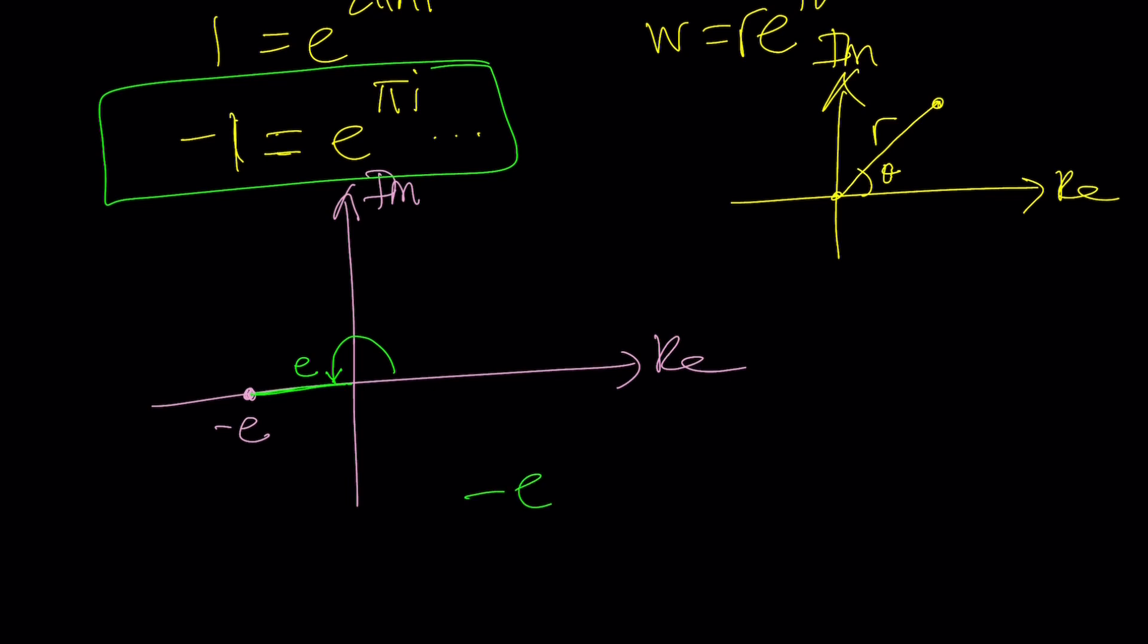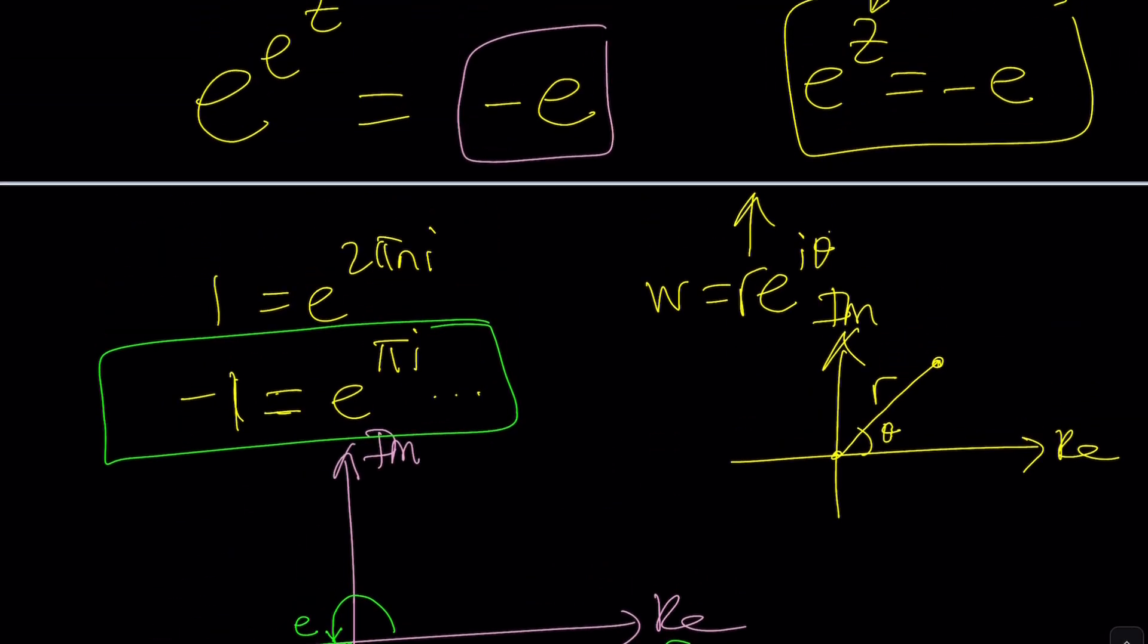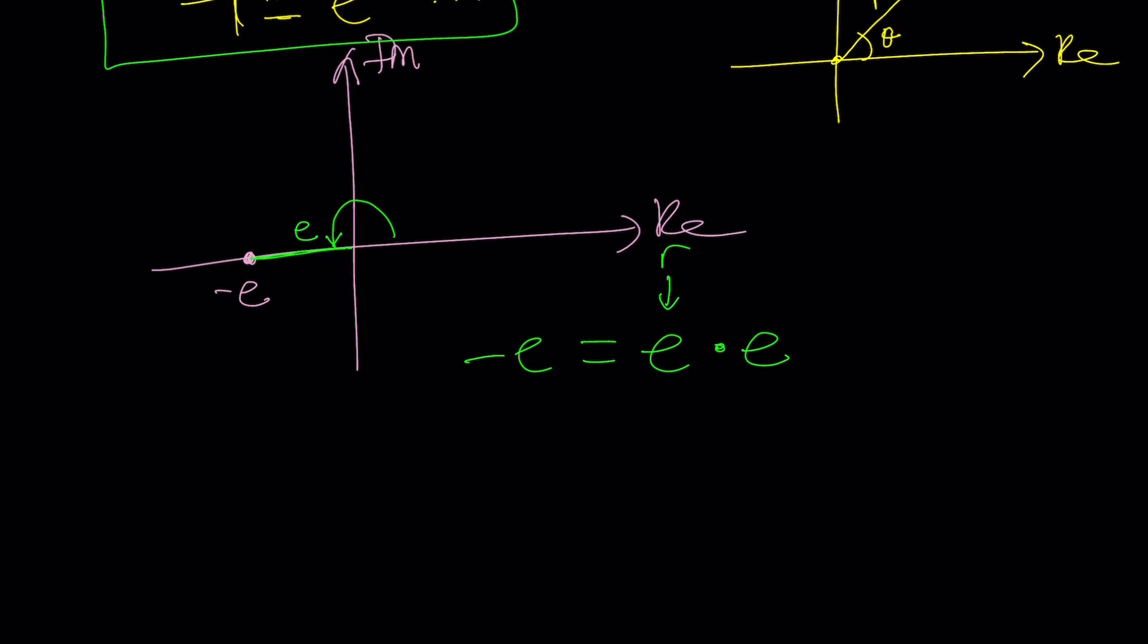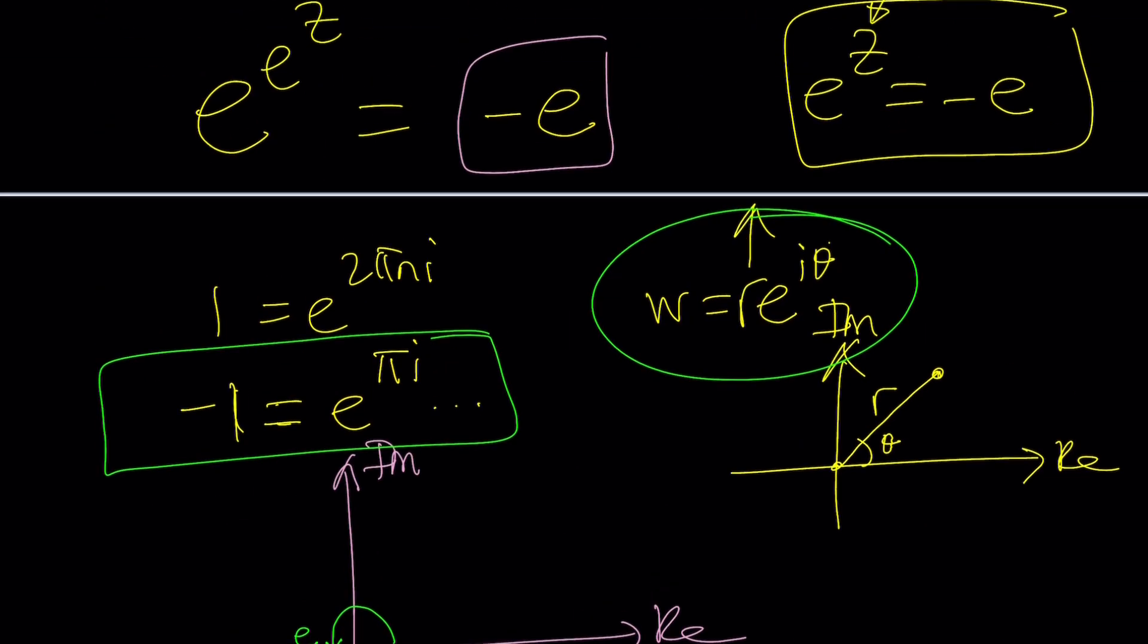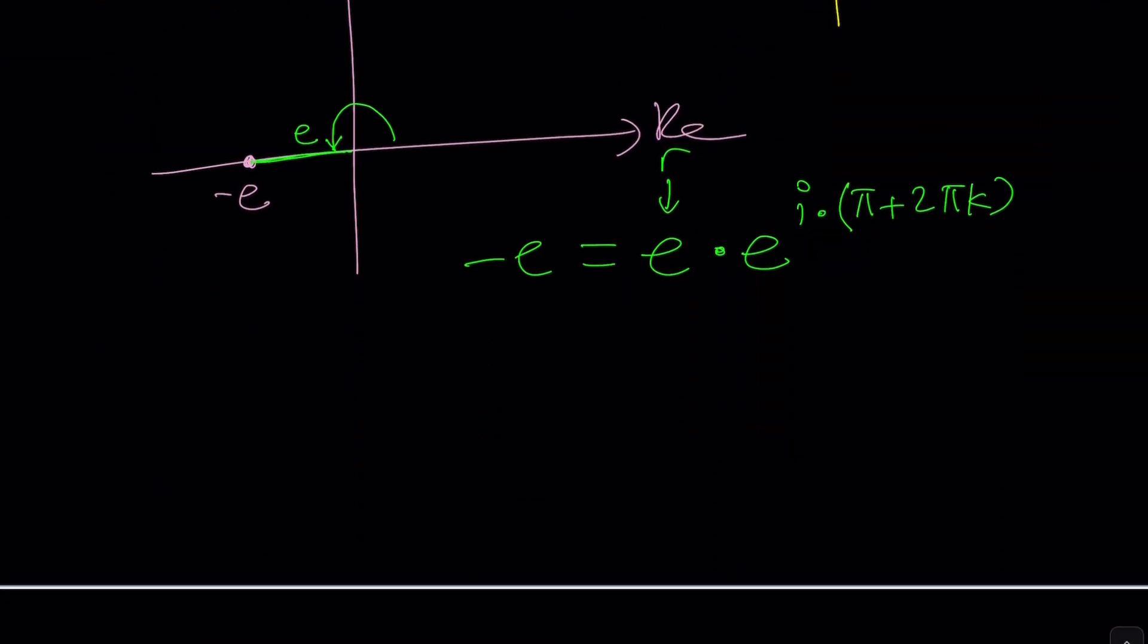So here's what we can do. Negative e can be written as e times which is the r, this is r, e to the power, you need another e for e to the iθ for this. And θ would be π but in the general form I'd like to express it at 2πk. I could also use n but I already used it for another example so I'm going to stick with k. This is my θ, the argument for a negative real number.